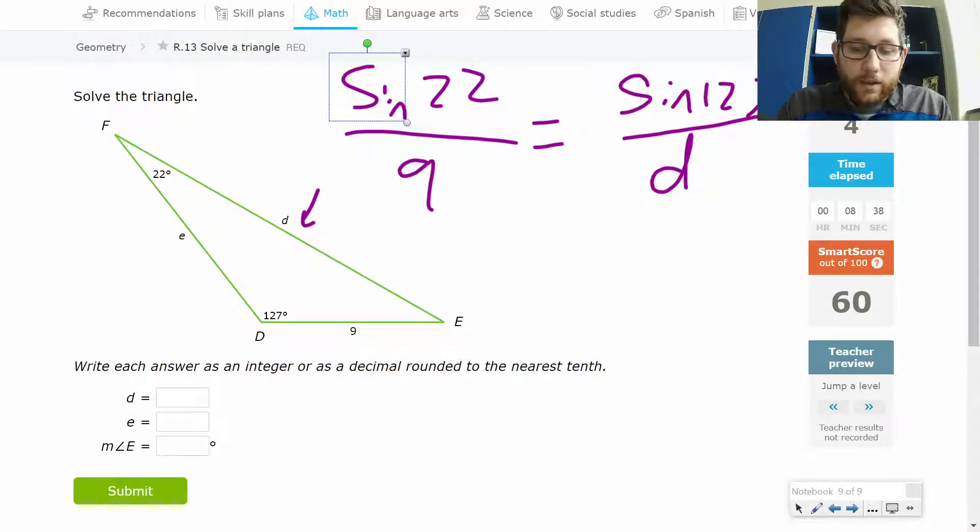So let's go ahead and solve this thing out. So we'd end up with 9 sine 127 divided by sine 22. And we should end up with roughly 19.18 or what we'll say, we'll call that 19.2 because it does ask to round to the nearest tenth. So that's the first side.